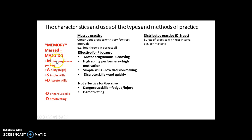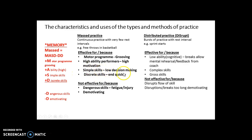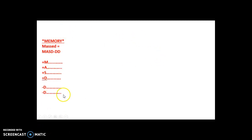This is a hooked acronym because it's the pivot point that allows you to memorize the other type as well. If you know that mass practice is effective for high ability and good for discrete and simple skills, you can straight away turn it over and say distributive practice is better for low ability because they get breaks to get feedback and mental rehearsal, and it's good for complex skills because the high levels of decision making mean you need a mental break. Pause and test yourself - how many advantages of mass practice can you remember, and can you hook that to give two effective uses of distributed practice?